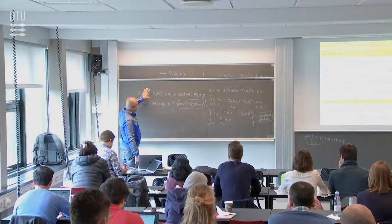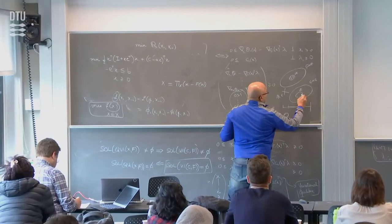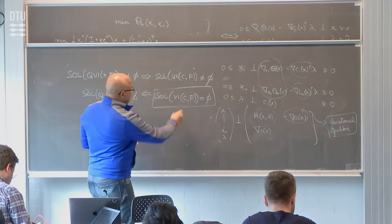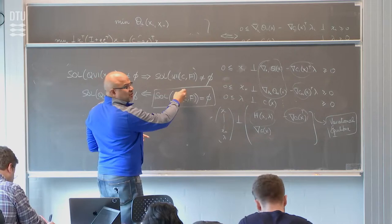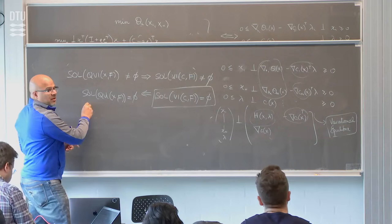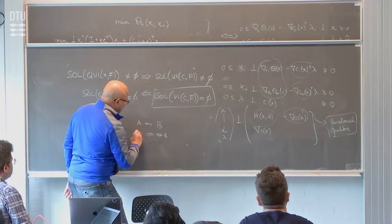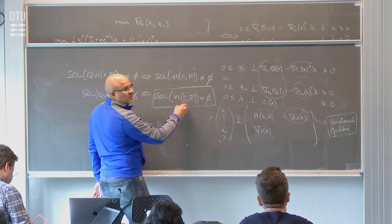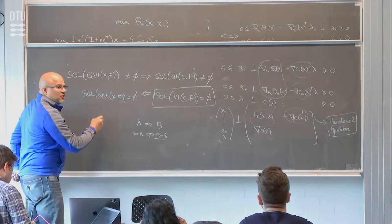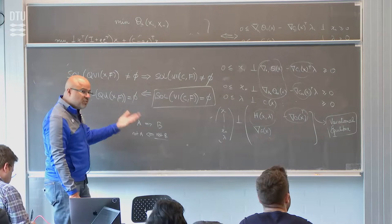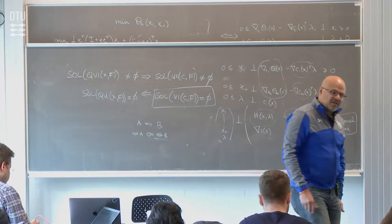If the GNE solution set is nonempty, that means the VI solution set is nonempty. The negation is: if the VI solution set is empty, then the QVI solution set must be empty. This is the contrapositive: A implies B implies not-B implies not-A. Not-B is that the VI solution set is empty; not-A is that the QVI solution set is empty. I am trying to provide conditions under which this implication holds, since it does not hold generally. The way we do this is using degree theory.